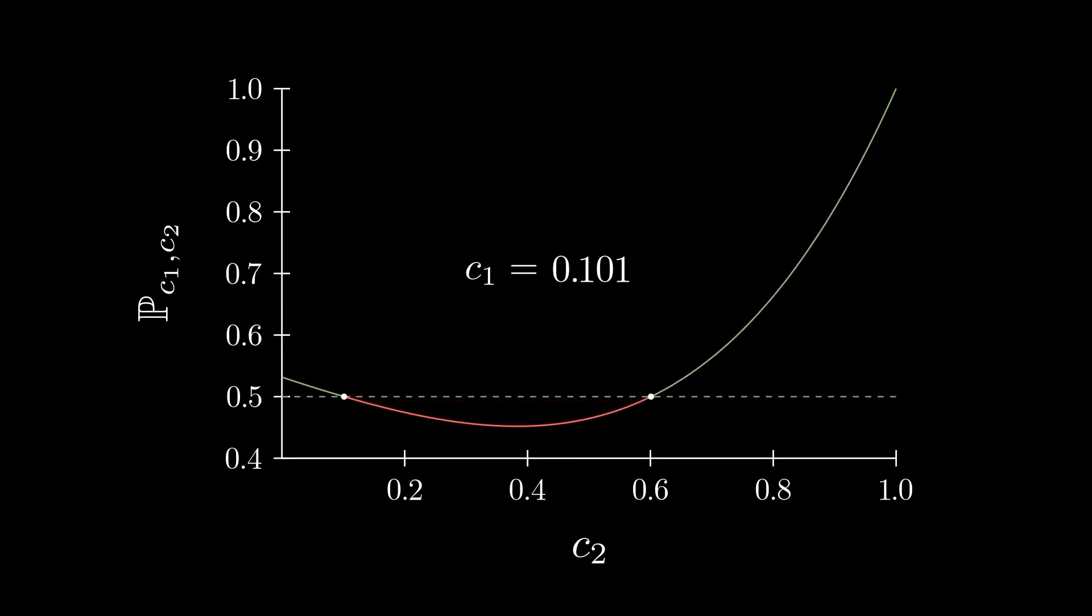As we vary our cutoff, we see that our strategy can always be exploited except for at one specific value. At this cutoff, the best our opponent can do is to pick the same cutoff. Any other value they choose will decrease their win probability.